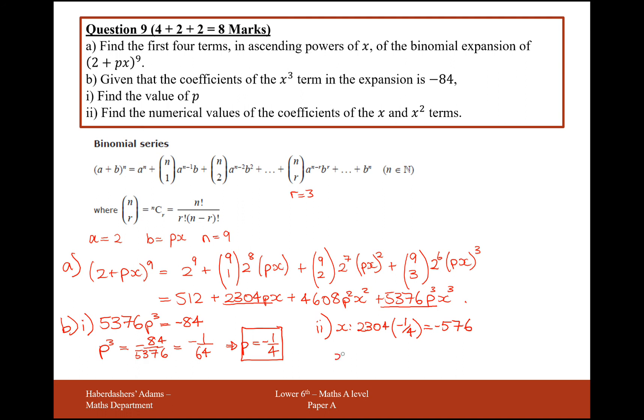And for the x squared coefficient, we're going to have 4,608 times minus a quarter squared. And for that one in the calculator, we get 288. Great.